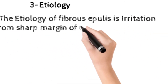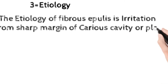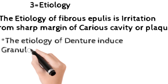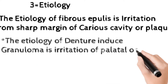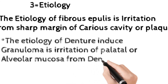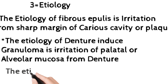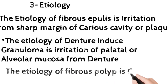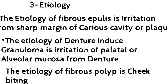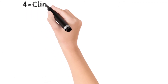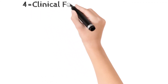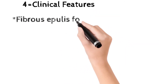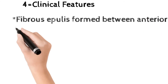The etiology of fibroepulis is irritation by sharp margins of a caries cavity or plaque. The etiology of denture-induced granuloma is irritation of the palatal or alveolar mucosa from the denture. The etiology of fibrous polyp is cheek biting. After etiology, we come to the clinical features.